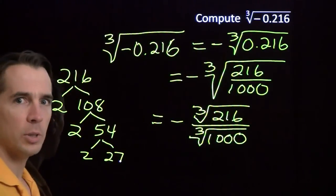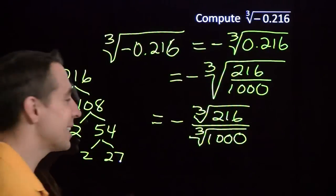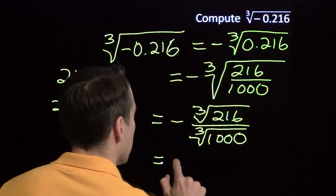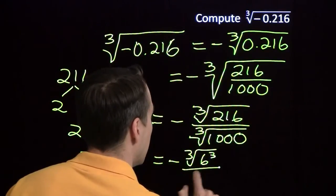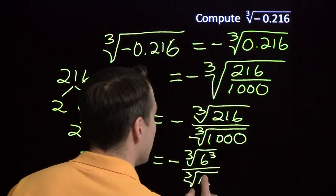2 cubed times 3 cubed, that's 6 cubed. 216 is 6 cubed. So this is the negative of the cube root of 6 cubed divided by the cube root of 10 cubed.